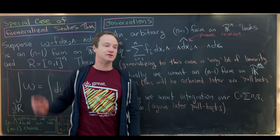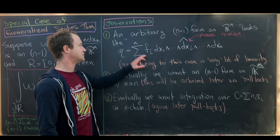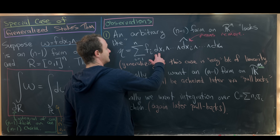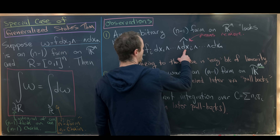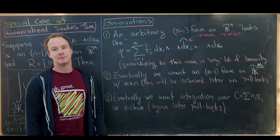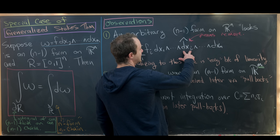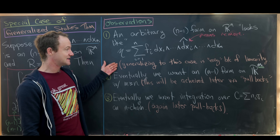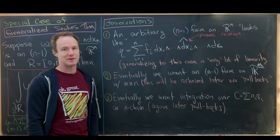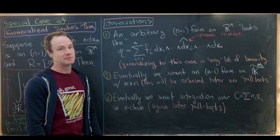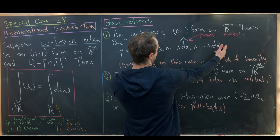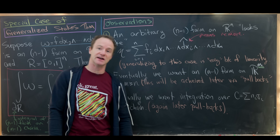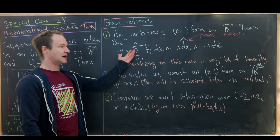I'll call it eta because we've already used omega, and it's the sum as i goes from 1 to n of f_i, where that's a differentiable function of n variables. And then we have dx1 wedge all the way up to dxn, where we have removed dxi. This removal is done with the fairly standard notation of putting a hat over it. Generalizing to this case from what we prove in this video is actually going to be pretty easy because of linearity — you would just need to prove it for the general form with dxi removed, which will be a nice homework exercise. And then the extension is linear.